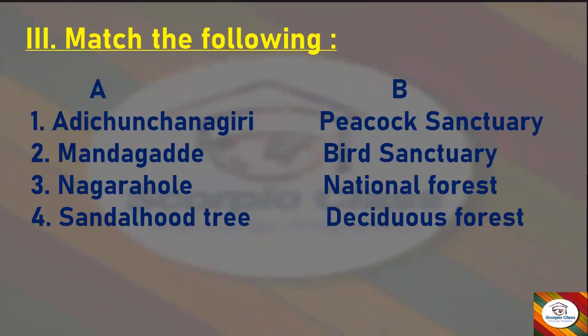Now we move to the third section: Match the Following. Column A is matched with correct answers in Column B. Adichunchanagiri — Peacock Sanctuary. Mandagadde — Bird Sanctuary. Nagarhole — National Forest. Sandalwood tree — Deciduous Forest. These are the correct answers for the Match the Following section.